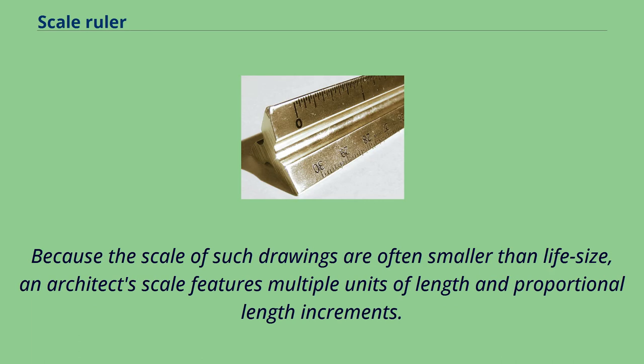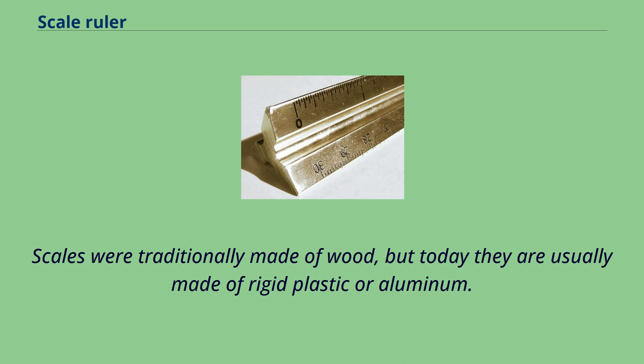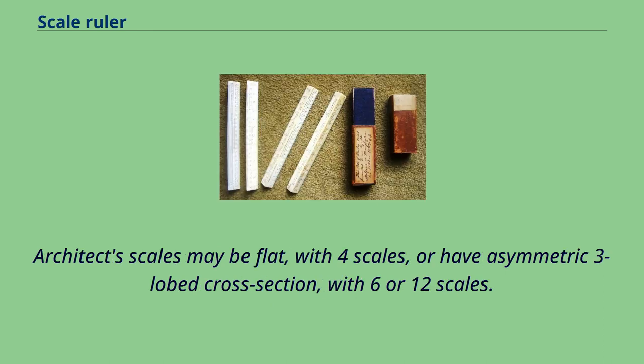Because the scale of such drawings are often smaller than life-size, an architect's scale features multiple units of length and proportional length increments. For accuracy and longevity, the material used should be dimensionally stable and durable. Scales were traditionally made of wood, but today they are usually made of rigid plastic or aluminum. Architect's scales may be flat with four scales, or have asymmetric three-lobed cross-section with six or twelve scales.